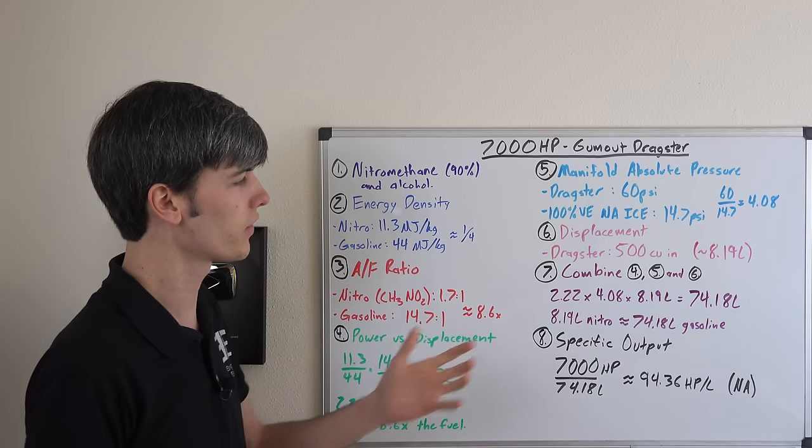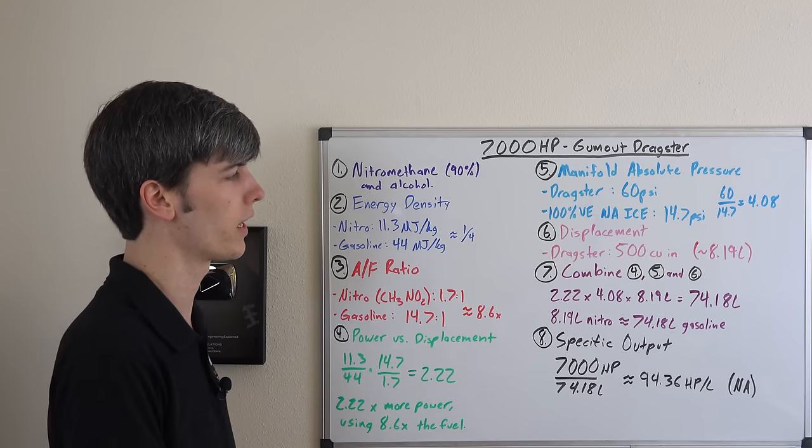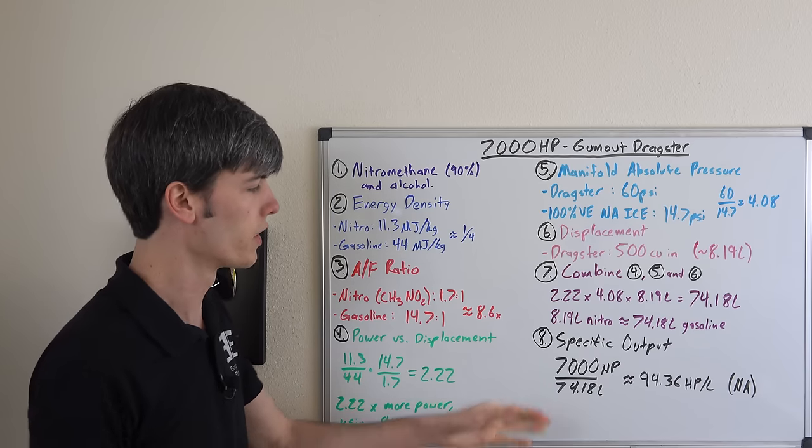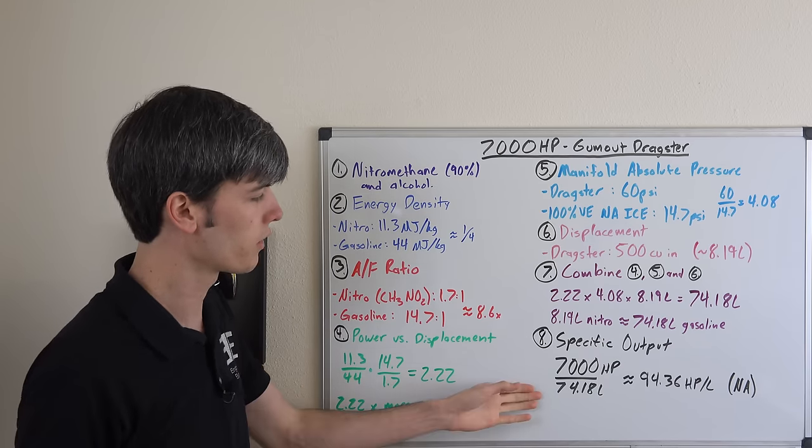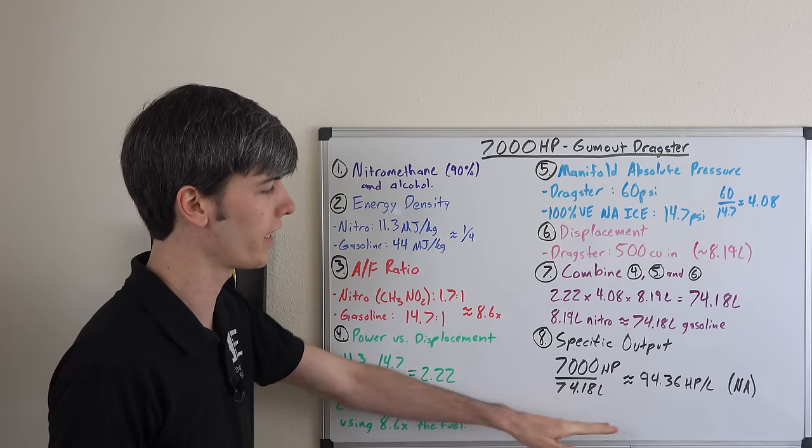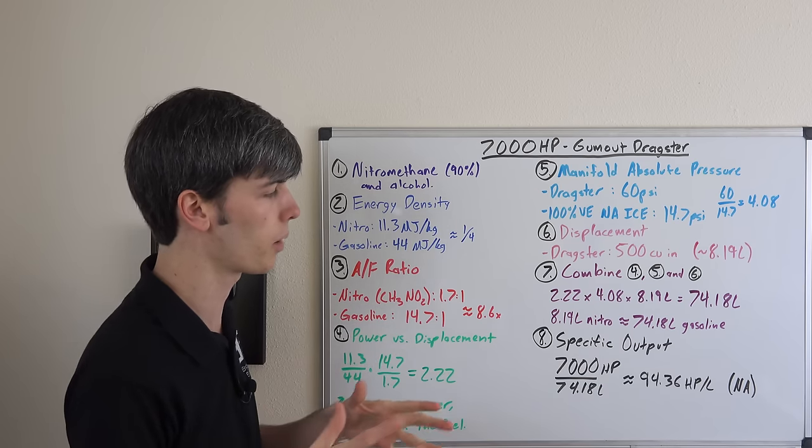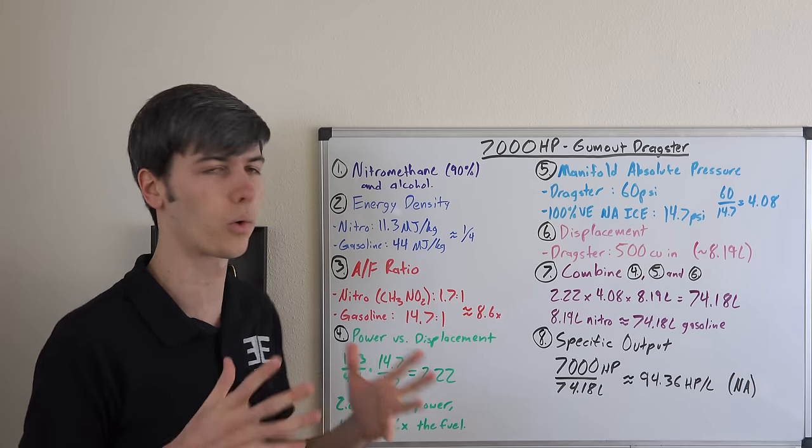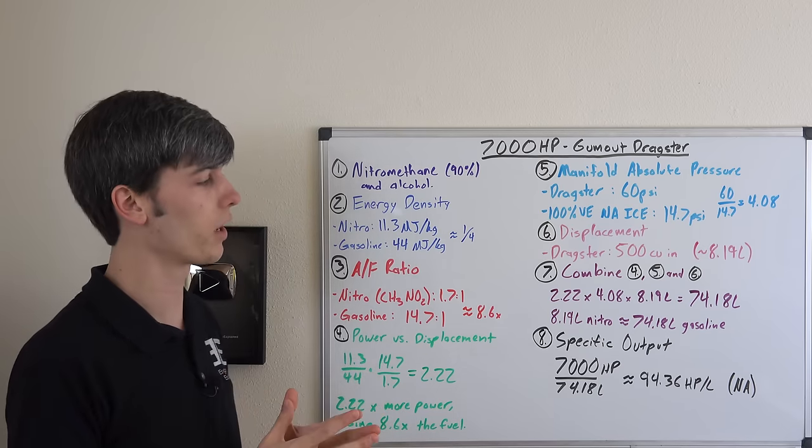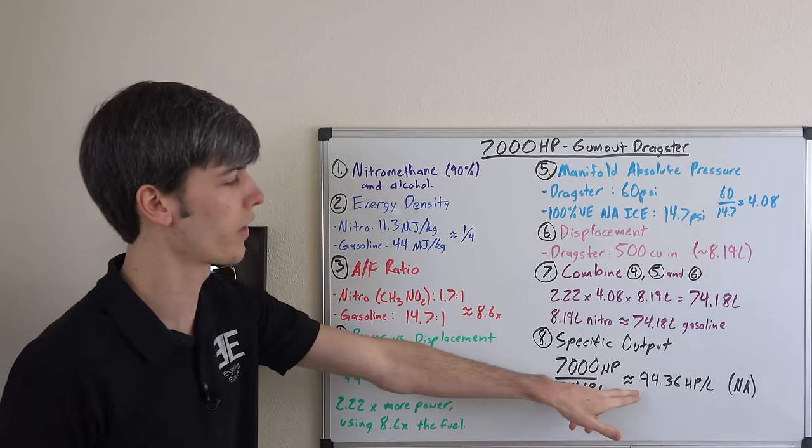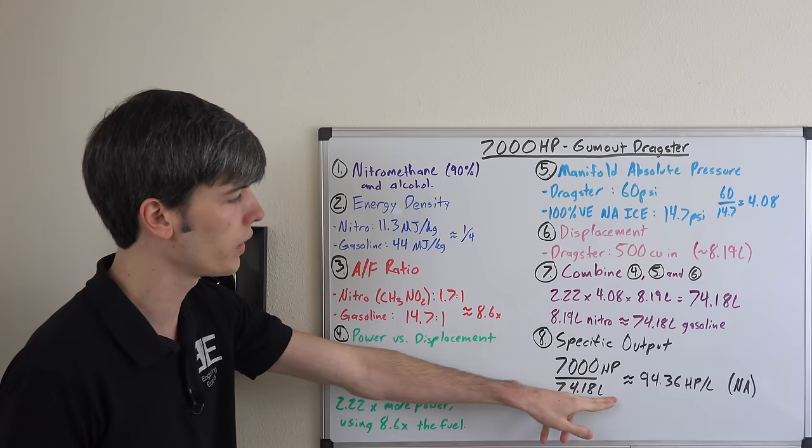So does it make sense that a 74 liter engine could produce 7,000 horsepower? Well let's just look at its specific output. 7,000 horsepower divided by 74.18 and that gives us an equivalent specific output of 94.36 horsepower per liter if this was a naturally aspirated 74 liter gasoline engine. Well does that number make sense? Actually yeah it's a very reasonable number.